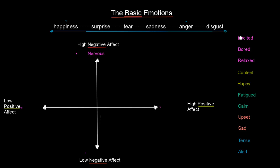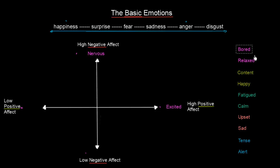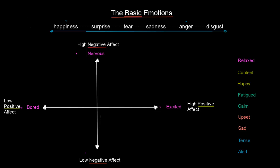Continuing — excited. When are you excited? When something has a very high positive effect on you. So excited goes at the high positive end. Now, bored is a little more tricky. Researchers have defined that you are bored when something has a low positive effect — not negative, but not really positive either. And relaxed gets placed at the low negative effect end.